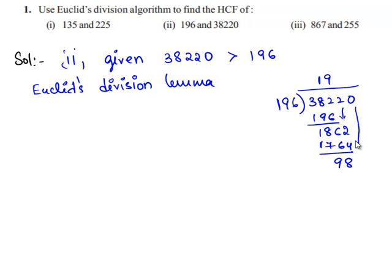We bring down 0. 196 goes into 980 exactly 5 times. 196 times 5 is 980, and the remainder is 0. Therefore 38,220 can be written as 196 times 195 plus 0.